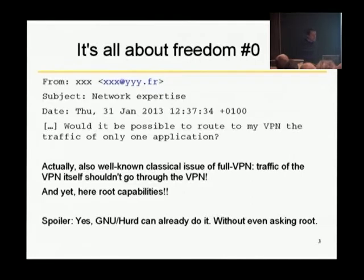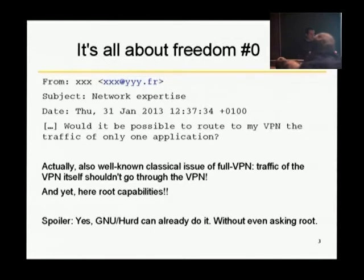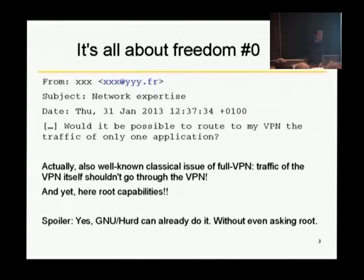Another way to introduce this: I got an email from a friend asking, would it be possible to route to my VPN the traffic of only one application? I want only that application to be using the VPN, not the other ones. That's quite a well-known issue with VPNs — you have one routing table, and unless you know powerful tools to do more advanced routing, it's not easy. And here he is root on the machine. What if you are not root on your machine? Well, GNU HURD can do this — without asking root, you can do that as a mere user.